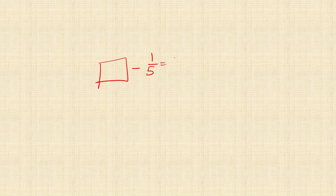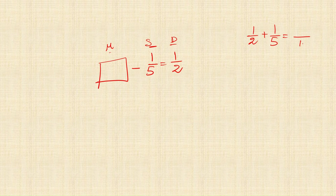Another example: unknown fraction minus 1 upon 5 equals 1 upon 2. To find the minuend, add the difference and the subtrahend: 1 upon 2 plus 1 upon 5. LCM is 10. Cross-products: 1 into 5 is 5, plus 2 into 1 is 2. So 5 plus 2 is 7. The answer is 7 upon 10.